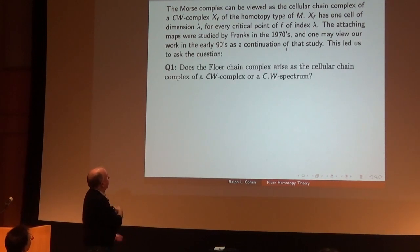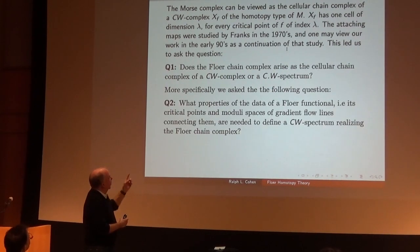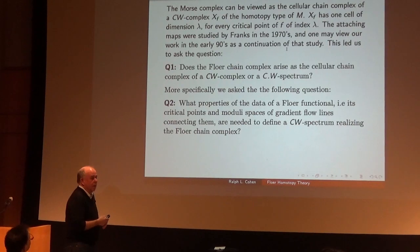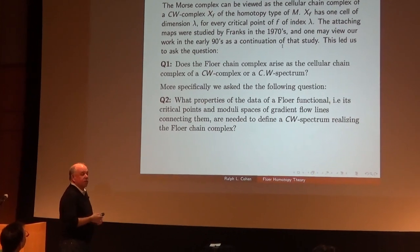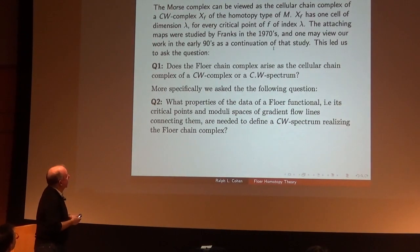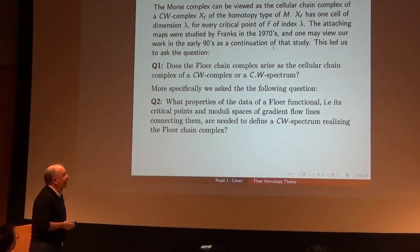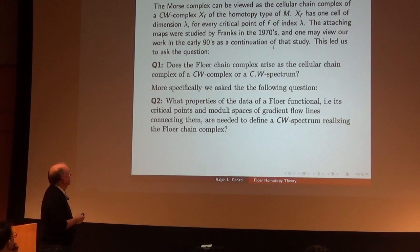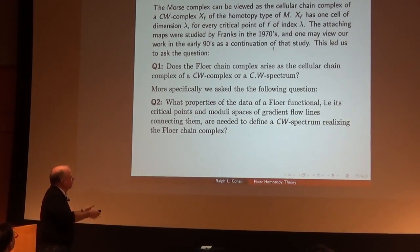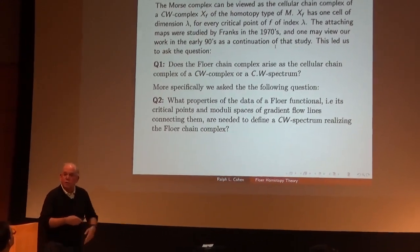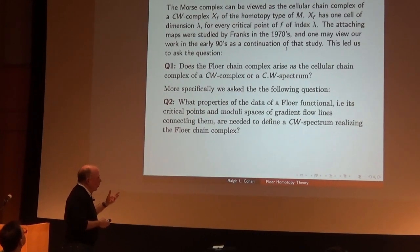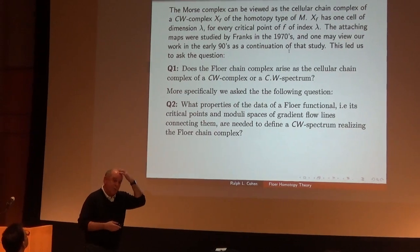When you have a Morse function on a compact manifold, you can get a CW complex — you have one cell in dimension λ for every critical point of index λ. Back in the 1970s, John Franks studied the attaching maps in this cell complex, and we thought of our project as a continuation of what Franks did. It naturally led to the question: can you do the same thing in Floer theory? Is there a naturally occurring CW complex that realizes the Floer complex? And what properties of the data — the moduli spaces in Floer theory — do you need in order to construct a CW complex that realizes the Floer chain complex?